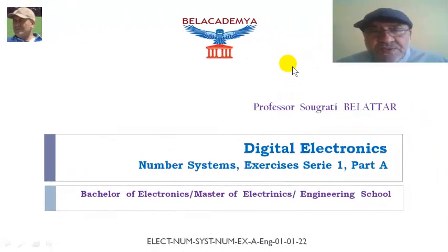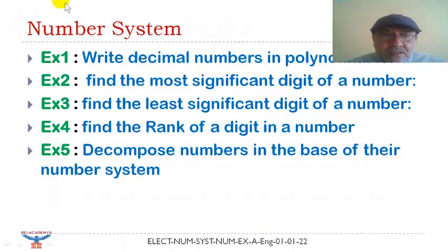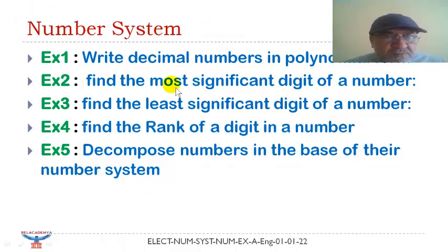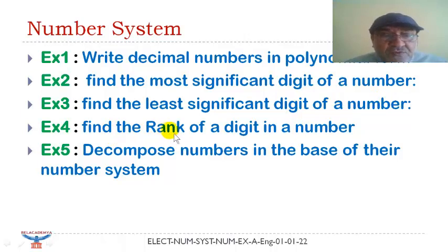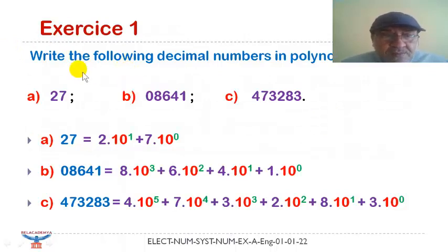Hello everyone, today we are going to talk about number systems relative to a digital electronics course — exercise 31, part A. We will have to write decimal numbers in polynomial form, find the most significant digit of all numbers, find the least significant digit of all numbers, find the rank of a digit in a given number, and finally decompose numbers in the base of their number system.